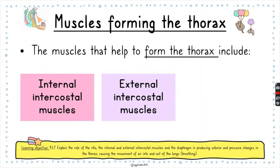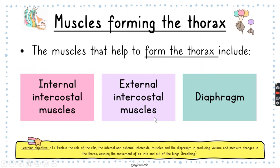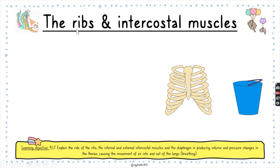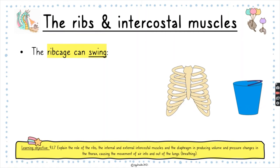The muscles that form the thorax include the internal intercostal muscles, the external intercostal muscles, and the diaphragm. An important thing to remember is that muscles contract and relax. When muscles contract, they shorten; when they relax, they lengthen back to their original size.